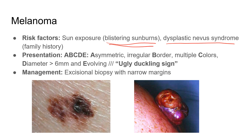The ABCDE system looks at: asymmetry, irregular border, multiple colors, diameter greater than 6 millimeters, and whether it's evolving. The ugly duckling sign is based on the idea that when people have nevi, you'd expect them all to look similar. If one sticks out — very dark, much bigger, very asymmetric — and just doesn't fit with the pattern of the other nevi, you invoke the ugly duckling sign. For management, on NBME exams you always do an excisional biopsy with narrow margins.